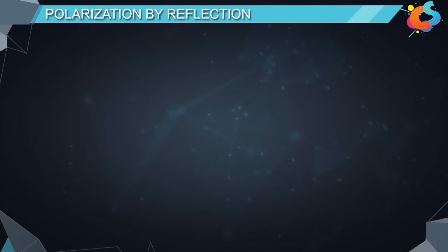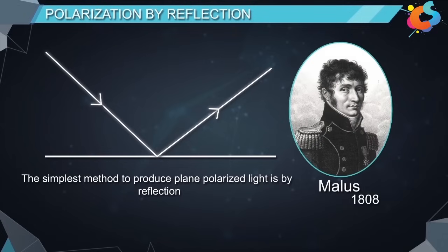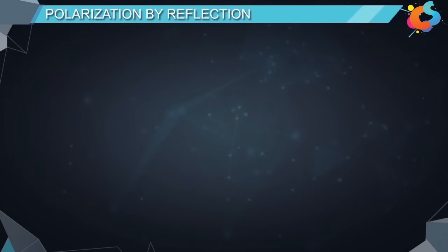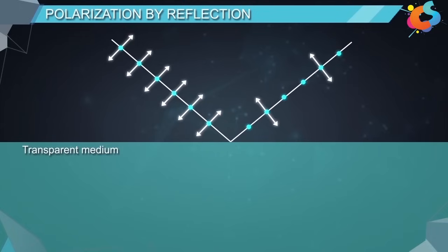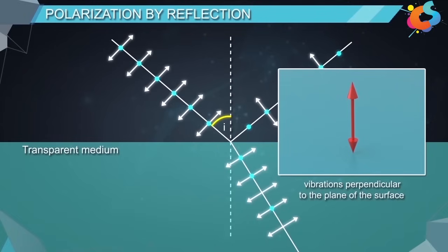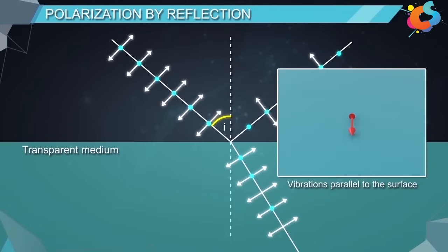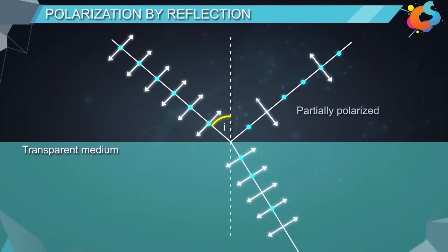Polarization by reflection. The simplest method to produce plane polarized light is by reflection. This method was first discovered by Malus in the year 1808. It was found that when an unpolarized light is incident on the surface of a transparent medium like water or glass, some part of the light gets reflected and the rest gets refracted through the material. The straight arrows represent vibrations perpendicular to the plane of the surface, and the dots represent vibrations parallel to the surface. Observing the reflected light, we can see it contains more dots than arrows, meaning the reflected ray is partially polarized.